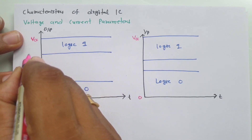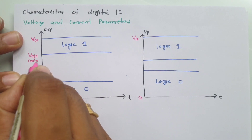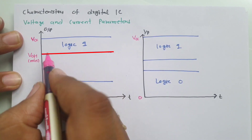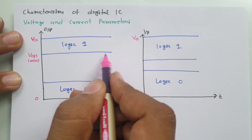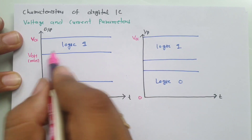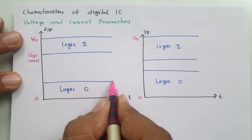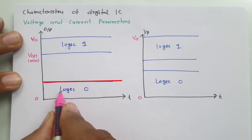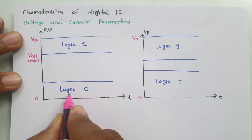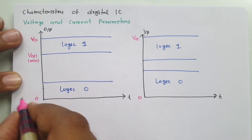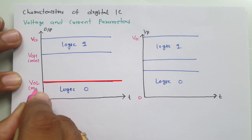We can say this is VOH minimum — it is the minimum voltage required at the output side to have logic 1. And this voltage boundary defines the maximum voltage for logic 0 at the output side. So this is VOL max.